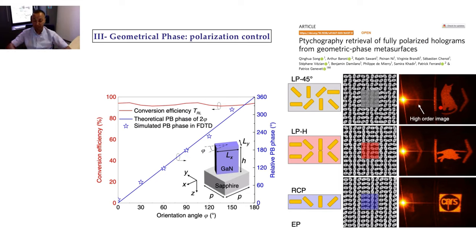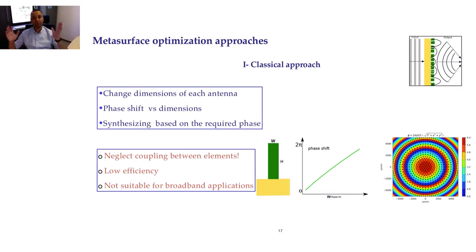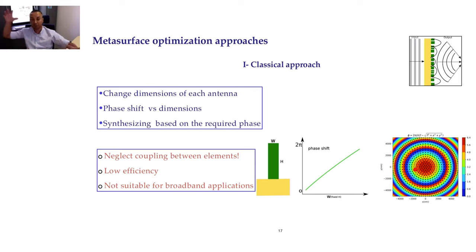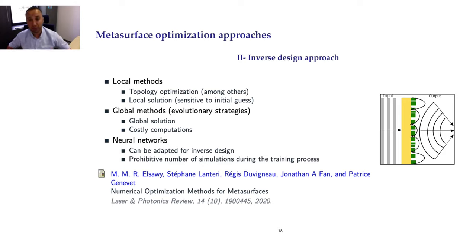Now that we know how to get 2π, imagine I want to make a lens. I'm sure the nanoresonator gives high amplitude, high reflection or transmission, and 0 to 2π phase control. To make a lens, there is an analytical equation — the phase characterization — and you synthesize the phase map, placing the corresponding element at each point: in the middle you need 2π, at another point perhaps 60 degrees, and so on. Once you do this you get the focusing lens. However, this technique neglects the near-field coupling between elements and the efficiency will not be very good.